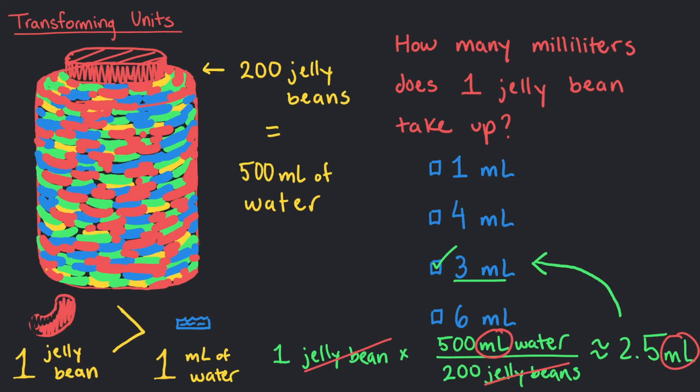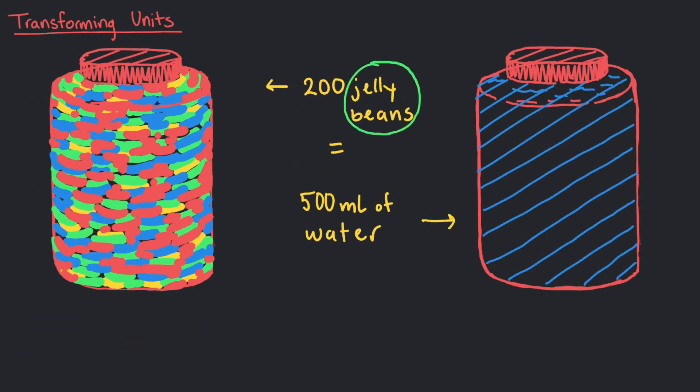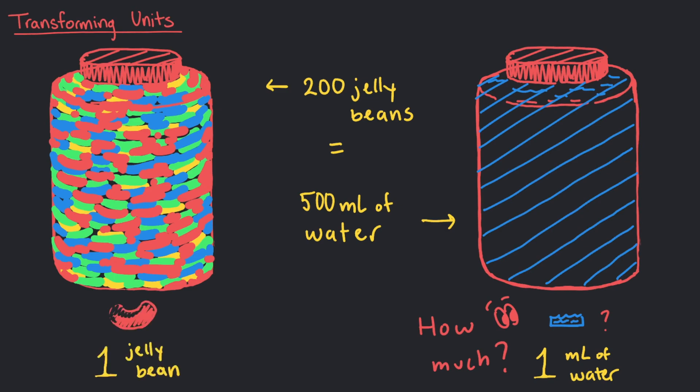We may be measuring the same volume, but with different units, we can grasp a better understanding of what that volume may look like. We may have a harder time understanding what 1 milliliter looks like, but we can roughly know and can imagine the size of a jelly bean. Using jelly beans, we can easily understand how much the 500 milliliters of water in the jar is.